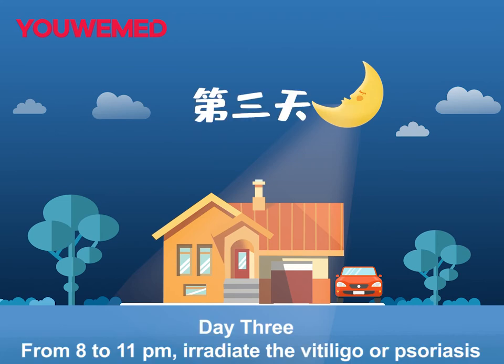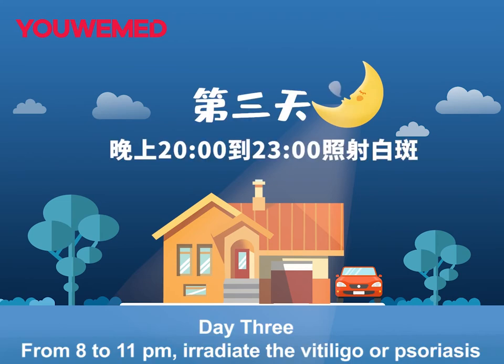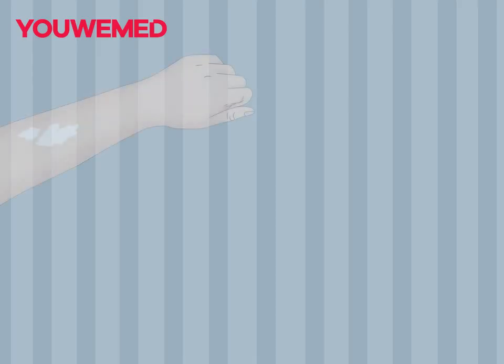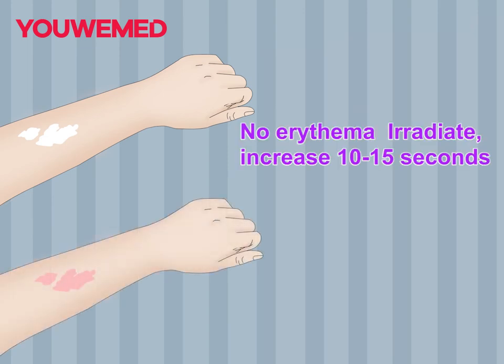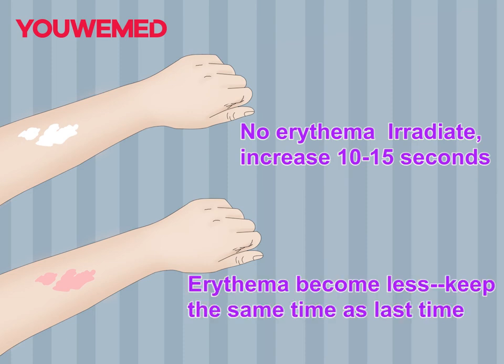Day 3, from 8 to 11 pm, irradiate the vitiligo or psoriasis. If erythema appears, increase the time by 15 seconds. If erythema becomes less, keep the same time as last time.